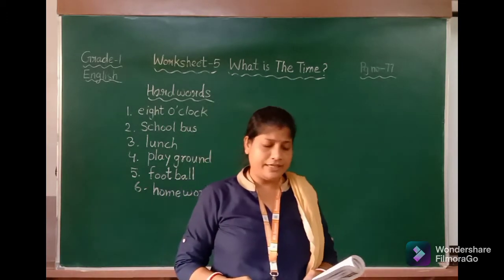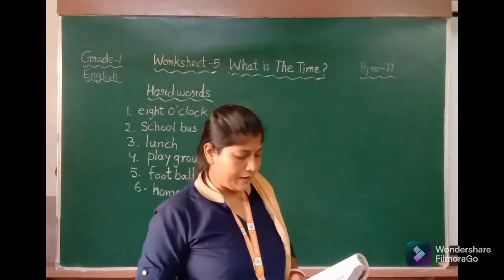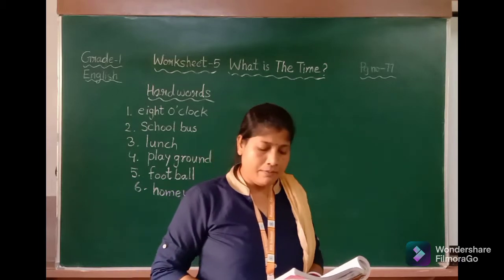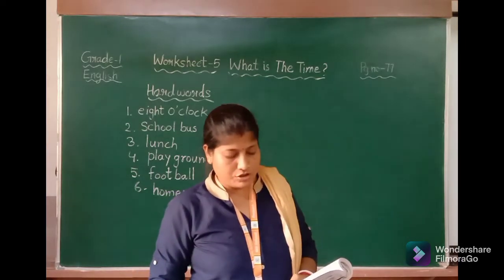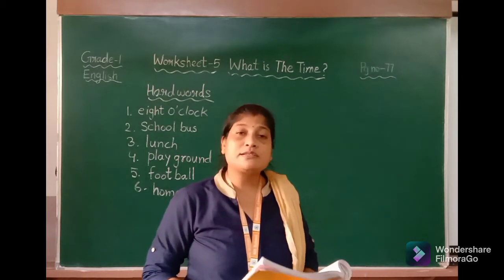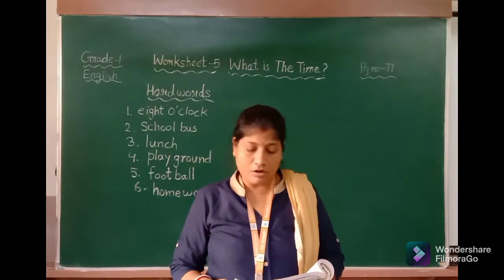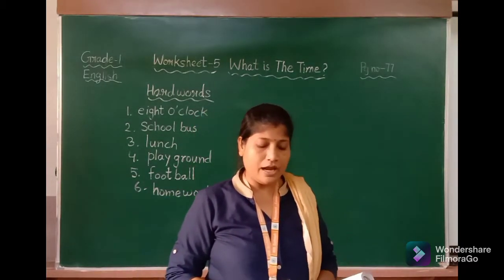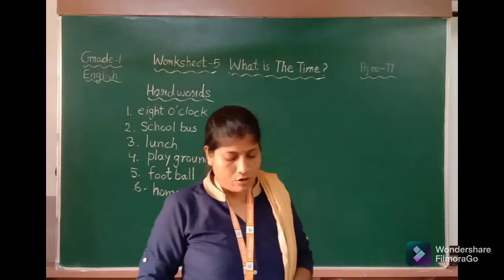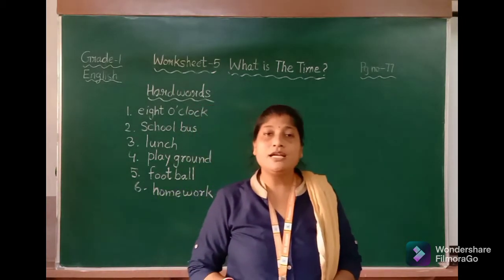One more time, let me explain this. It is 8 o'clock — ab 8 baj rahe hain. Raj and Sam are at the bus stop — Raj aur Sam bus stop par pahunche hain. They wait for the school bus — woh apne school bus ka intezaar kar rahe hain. It is 9 o'clock — ab 9 baj rahe hain. Now they are at school — ab woh school pahunch gaye hain. It is 12 o'clock — ab 12 baj rahe hain. It is time for lunch — yeh lunch ka time hai.